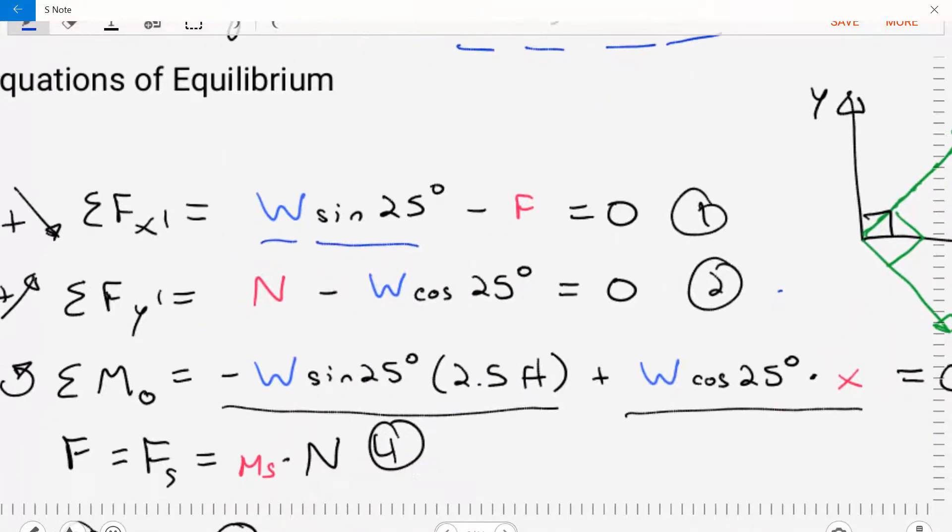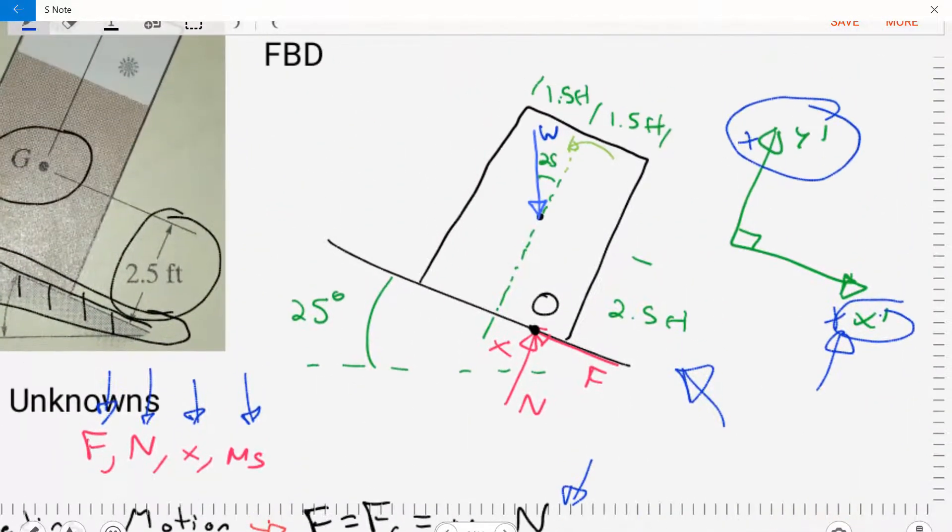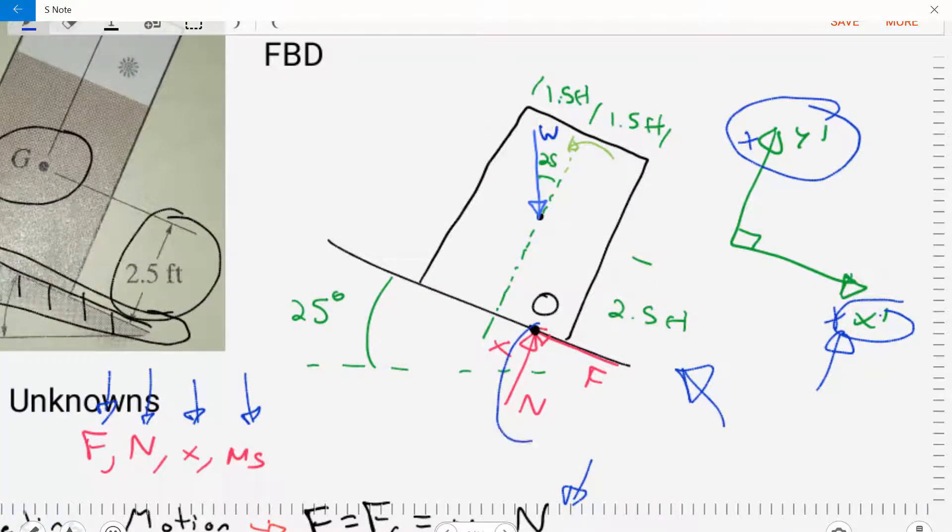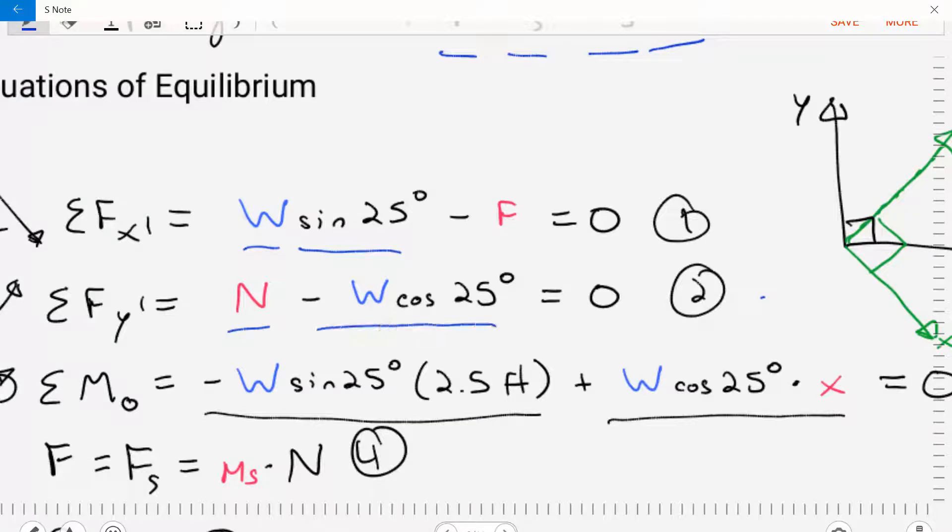Okay, now let's do the sum of the forces in the Y prime direction, and we're going to assume that slanted upwards is positive. If we go to our diagram, we see our normal force is pointed upwards, so we'll do an N. And then we also will see that there's a component of the weight that's pointed in the downwards direction, that is the weight is W cosine of 25 degrees. So we'll put those two together. We get N minus W times cosine 25 degrees. We set that equal to zero. That's our second equation.